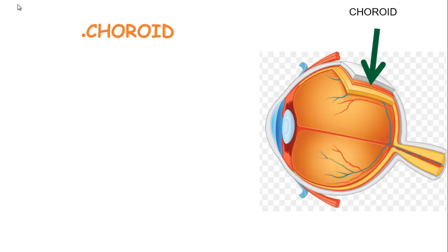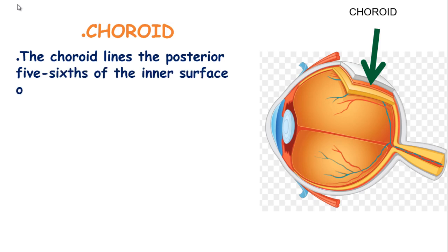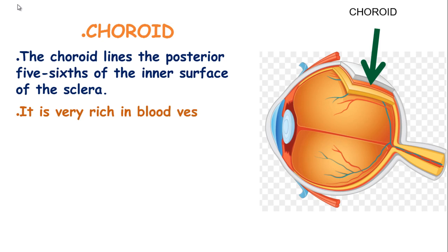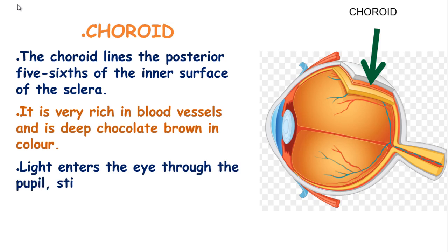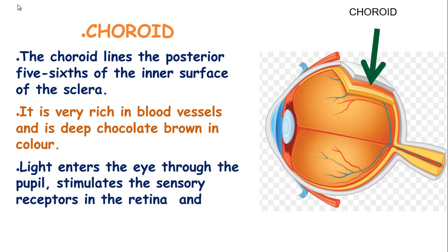The choroid lines the posterior five-sixths of the inner surface of the sclera. It has a very rich blood supply and is deep chocolate brown in color. When light enters the eye through the pupil, it stimulates the sensory receptors in the retina and is then absorbed by the choroid.